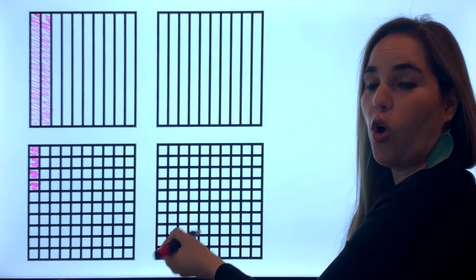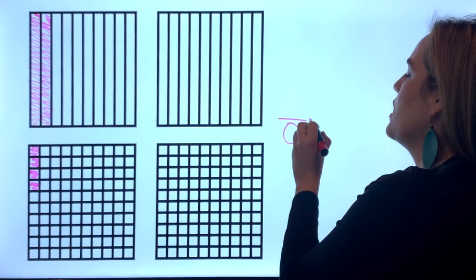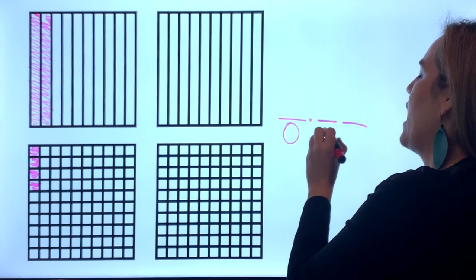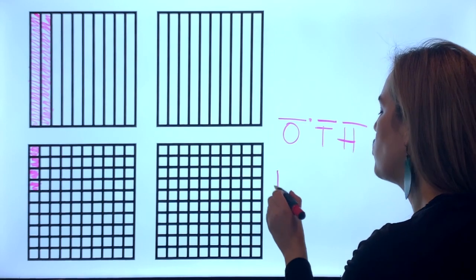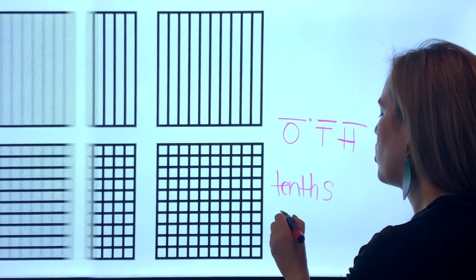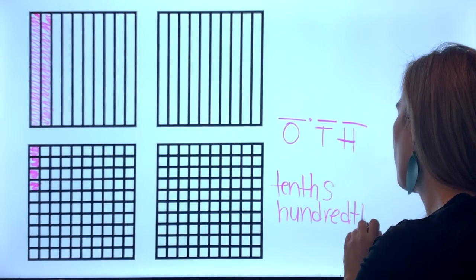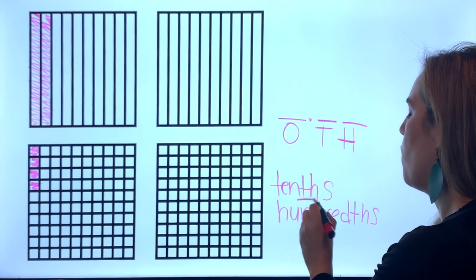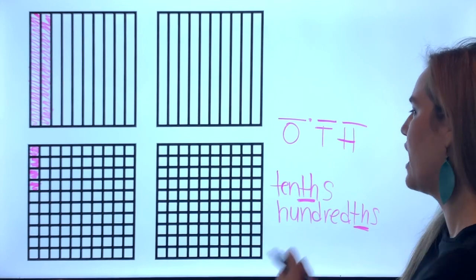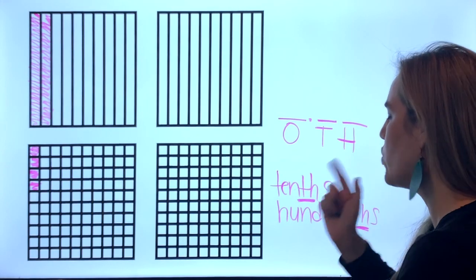Do we have one whole? No, so we're gonna do our place value charts. We have the ones, decimal, th. And if you have seen other of my videos, this is a trick to know how to do your decimal place value charts. We have the word tens and we have the word hundreds. Well both of them have the letter th, so you have your ones, tens, and hundreds, th, decimal, th.